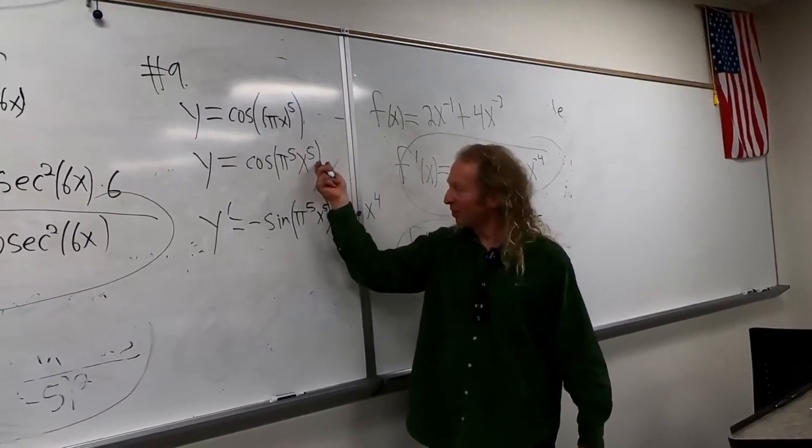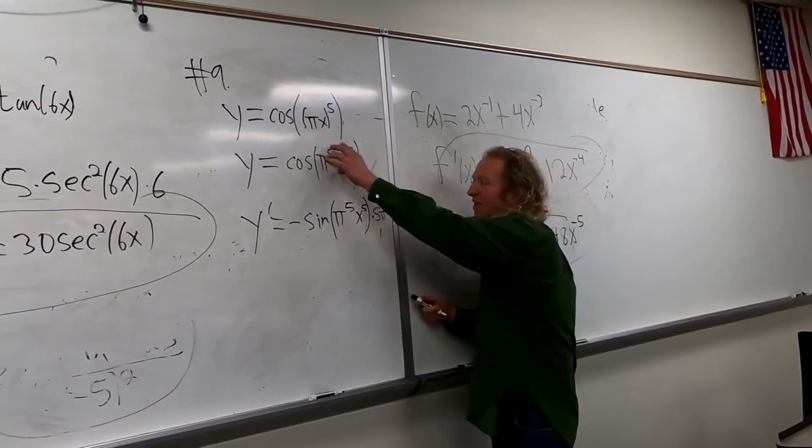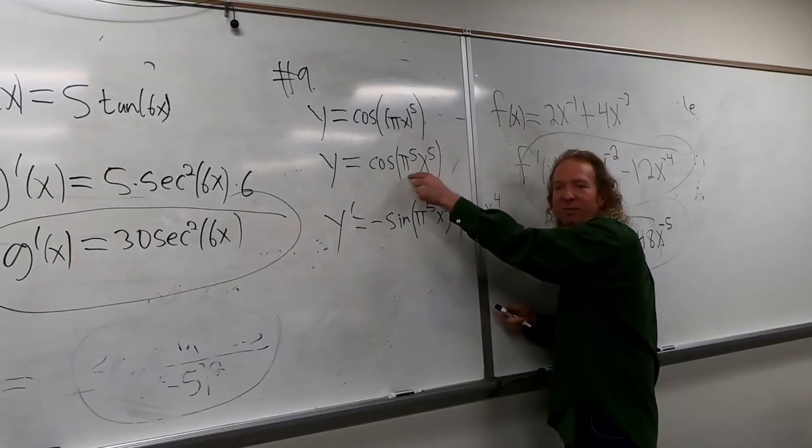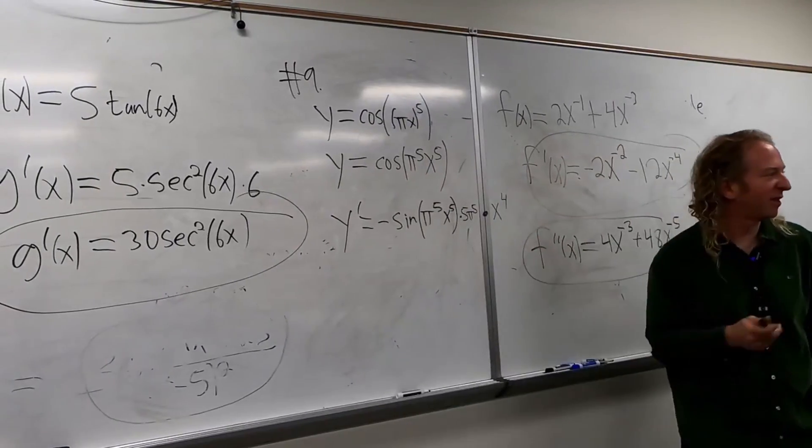So again, you put the five in the front, and this is a constant, so you get, it's like five x to the fourth and the pi to the fifth hangs out. The pi to the fifth hangs out.